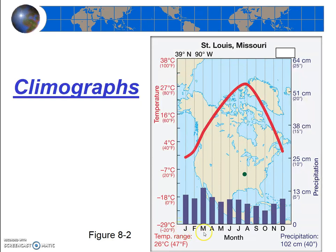First notice that the x-axis represents the months of the year, January through December. Next notice that the temperature is represented by a line graph using the left y-axis, and precipitation is represented by a bar graph that uses the right-hand side y-axis. This particular climograph is for St. Louis, Missouri.